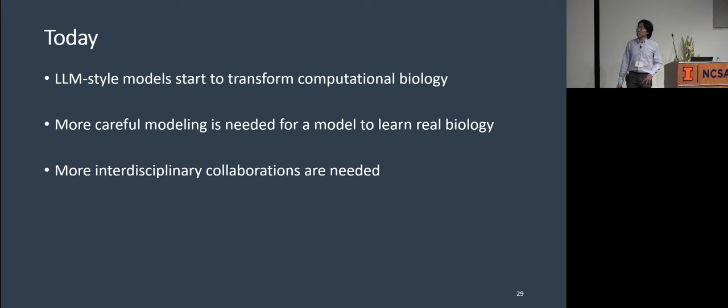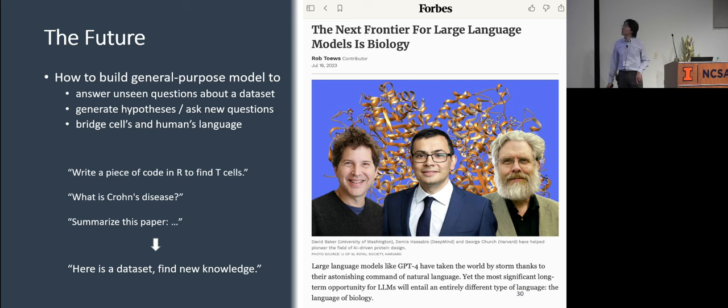So today, what's happening is LLM-style models start to transform computational biology. But we still need more careful modeling to learn real biology. And we need more interdisciplinary collaborations to make this happen. People are talking about that the future will be applying large language models in biology. And the important things we need to do in the future is to answer unseen questions about a dataset. If we give a model a dataset and we give it a question it has never seen before, can it answer this. And we also want a model to be able to generate hypotheses or, in a sense, to ask new questions, not just answer questions, because this is how science works.